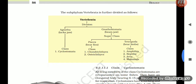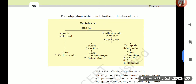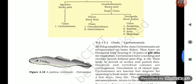The subphylum Vertebrata is further divided into Agnatha (lacks jaw) and Gnathostomata (bears jaw). Gnathostomata is a superclass divided into Pisces and Tetrapoda, while Agnatha divides into class Cyclostomata.